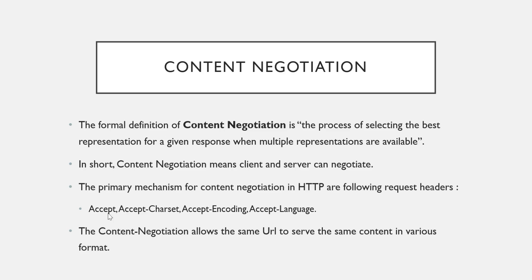Content negotiation depends on the following headers: Accept, Accept-Charset, Accept-Encoding, and Accept-Language. The primary header is the Accept header. With the help of the Accept header, you can specify the media type or format of your response. We already studied this header in the media type formatter video, so if you are not aware of it, please watch that video.